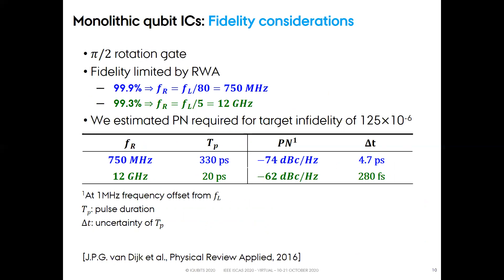The fidelity is limited to 99.3 percent if the Rabi frequency is equal to one-fifth of the Larmor frequency, that is 12 GHz in our case. We considered 12 GHz as an extreme case. We estimated the phase noise required for a target infidelity of 1.25×10⁻⁵. In this table, we report the Rabi frequency, the pulse duration, the phase noise at 1 MHz frequency offset from the Larmor frequency carrier at 60 GHz, and the uncertainty delta-t of the pulse duration for the same target fidelity. The calculated values of phase noise are, in both cases, achievable in silicon, as we will show.